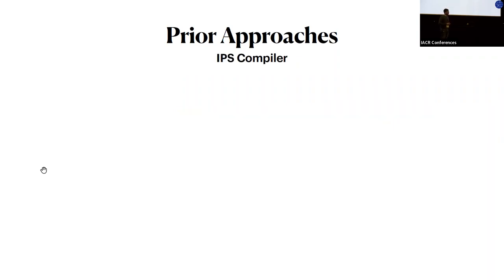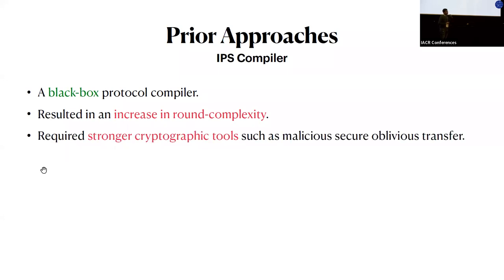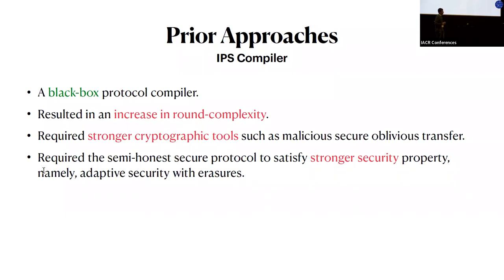Another popular compiler was proposed by Ishai and Prabhakaran in Crypto 2008, called the IPS compiler. Unlike the GMW compiler, this compiler is a black box protocol compiler making black box use of the initial protocol. Unfortunately, it resulted in an increase in round complexity and requires stronger cryptographic tools — namely, a malicious secure oblivious transfer. So if your goal is to construct a malicious secure oblivious transfer, this compiler is not useful since it requires one as a building block. Additionally, it requires the semi-honest secure protocol to satisfy adaptive security with erasures.